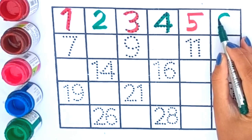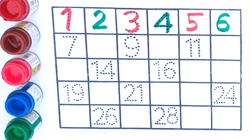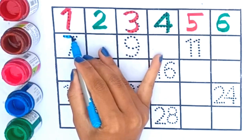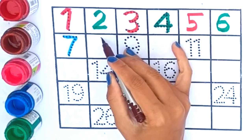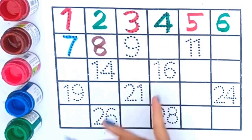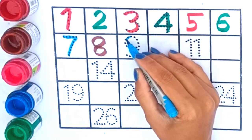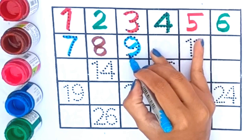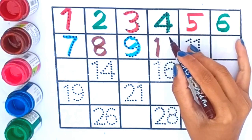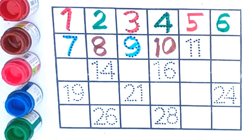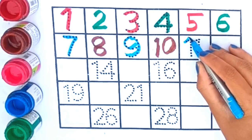6, yeh hai 6. Now this is 7, yeh hai bacchho 7. 8. 9. 10.